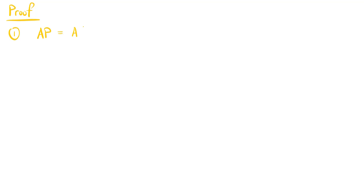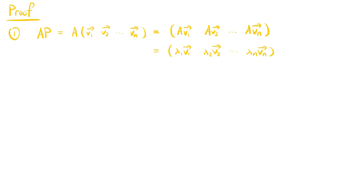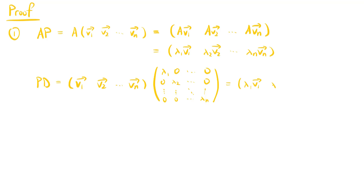Let's first prove the first point. A times P equals A times the matrix with columns v1, v2 up to vn, which equals the matrix with columns Av1, Av2 up to Avn. Since the vi's are eigenvectors, this equals the matrix with columns λ1 v1, λ2 v2 up to λn vn. On the other hand, P times D equals the matrix with columns v1, v2 up to vn times the diagonal matrix with diagonal entries λ1, λ2 up to λn, which also equals the matrix with columns λ1 v1, λ2 v2 up to λn vn. Hence, A times P equals P times D.